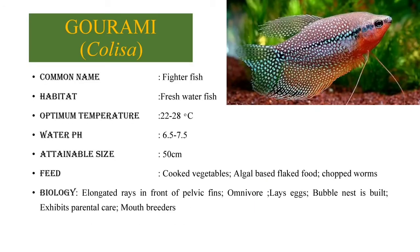The most prominent character is that the male is aggressive to other males. The next beautiful ornamental fish is Gourami, which is scientifically called Colisa. The common name is Gourami. It lives in fresh water. The optimum temperature for best survival is 22 to 28 degrees C. The pH of the water should be 6.5 to 7.5. The maximum attainable size of this fish is 50 cm. It feeds on vegetables, flaked foods, and worms. The body of the fish is elongated and it has a ray in front of the pelvic fin. It is basically omnivorous, lays eggs, builds bubble nests, exhibits good parental care, and is a mouth breeder.